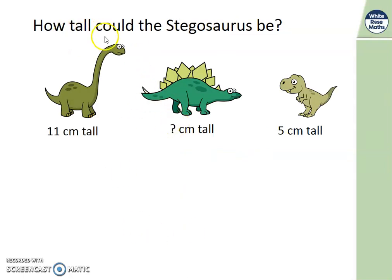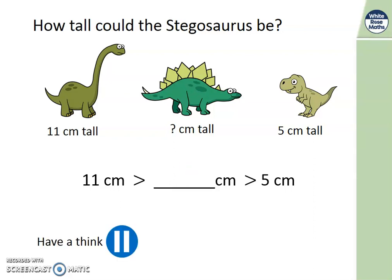Let's have a look at this question. How tall could the Stegosaurus be? Well, the Diplodocus is 11 centimetres tall. And we know that the T-Rex is 5 centimetres tall. So what numbers could go between? Let's have a think. What numbers can go between 11 and 5? Pause the video and have a think. Can you find all the possibilities? Let's see how you did. We could have 10, 9, 8, 7 or 6 centimetres as being between 11 and 5. Well done if you spotted that.